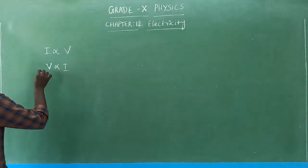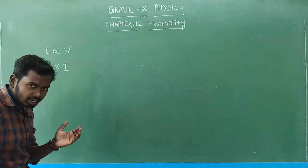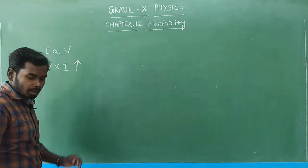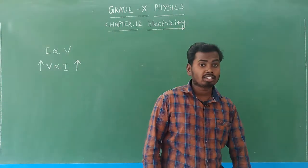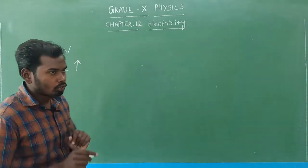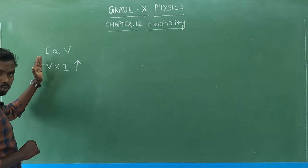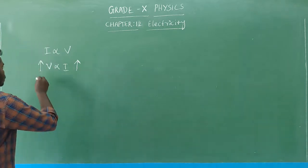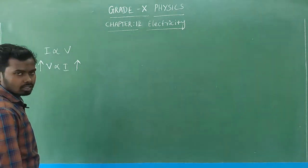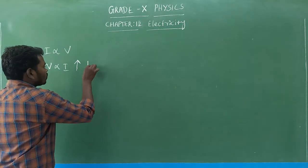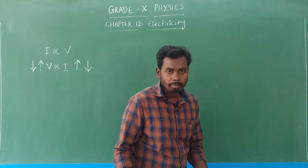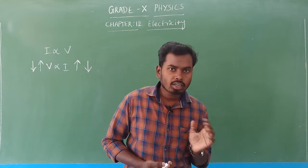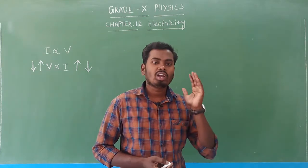When the potential difference across the two terminals of a conductor increases, correspondingly the current flowing through the conductor also increases. When the potential difference decreases, correspondingly the current also decreases. If the potential difference is zero, then the current value will also be zero.